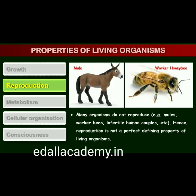Further, there are many organisms which do not reproduce - mules, sterile worker bees, infertile human couples, etc. Hence, reproduction also cannot be an all-inclusive defining characteristic of living organisms. Of course, no non-living object is capable of reproducing or replicating by itself.